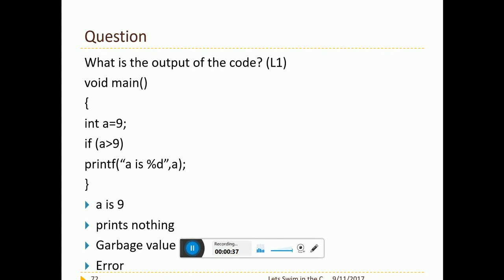What is the output of this code? I set int a equal to 9. I check if a greater than 9. Is 9 greater than 9? No, it's wrong. So what is the answer? Answer has to be B. It prints nothing since the condition is not met.